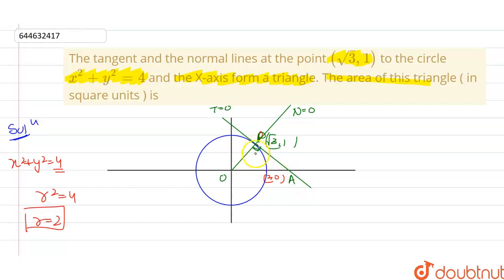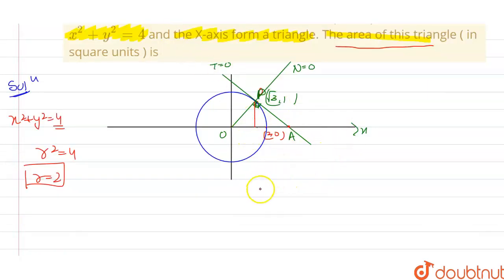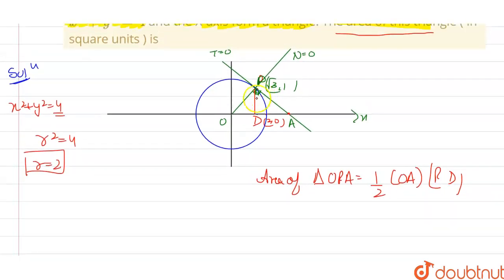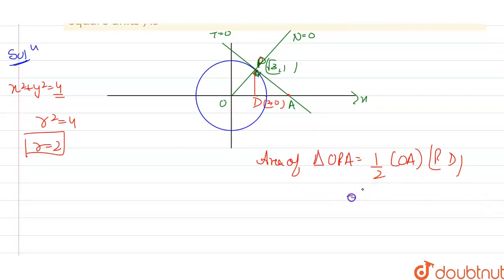I'll draw a perpendicular from point P to the x-axis, calling the foot point D. To find the area of triangle OPA, I use: area = ½ × base × height = ½ × OA × PD. Since P is (√3, 1), the y-coordinate distance PD equals 1. So the area becomes ½ × OA × 1.